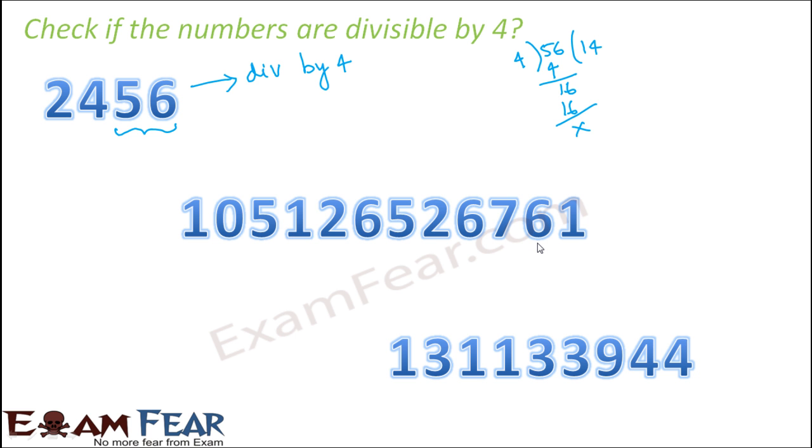Look at this number. This is such a huge number. Now this number can actually scare you if somebody asks you to quickly tell if this is divisible by 4 or not. But with this divisibility rule, it will not scare you because you need to bother only about the last two digits, which is 61. And it is pretty simple to actually divide and see if 61 is divisible by 4 or not.